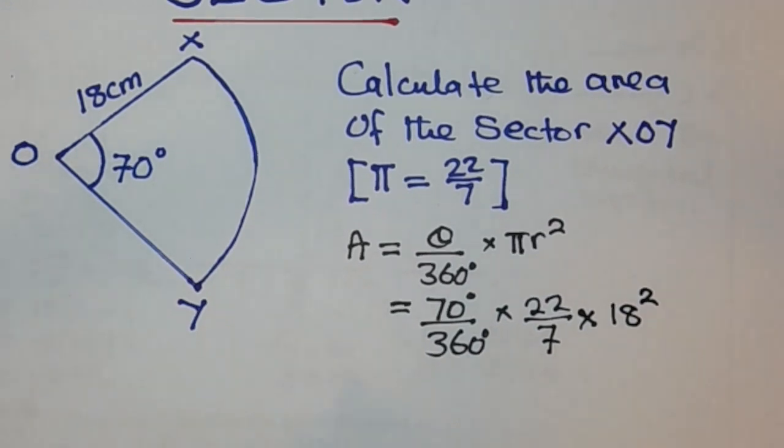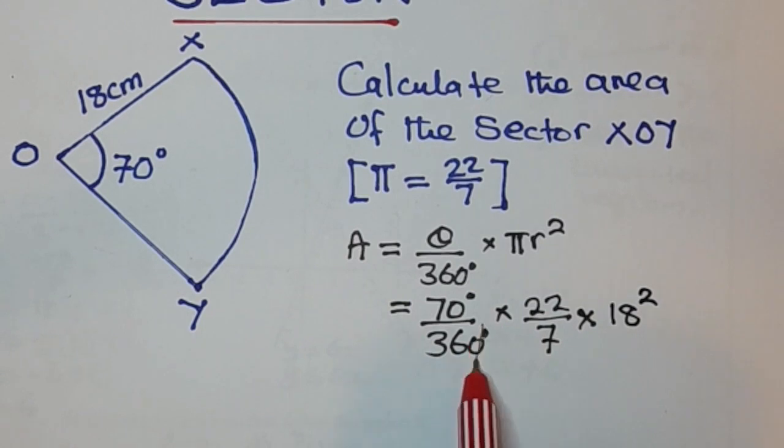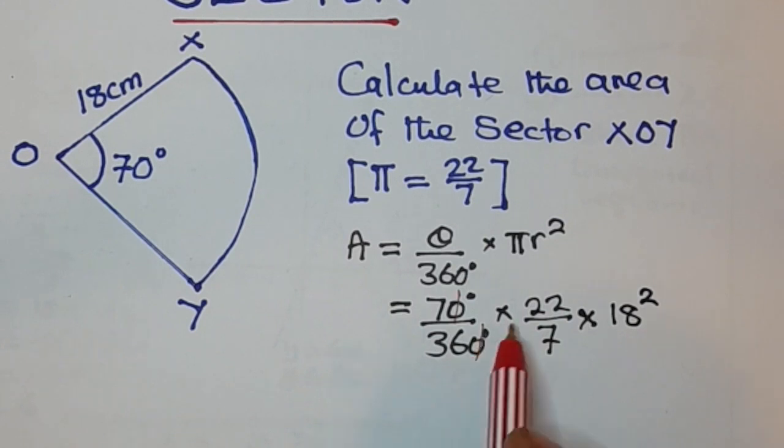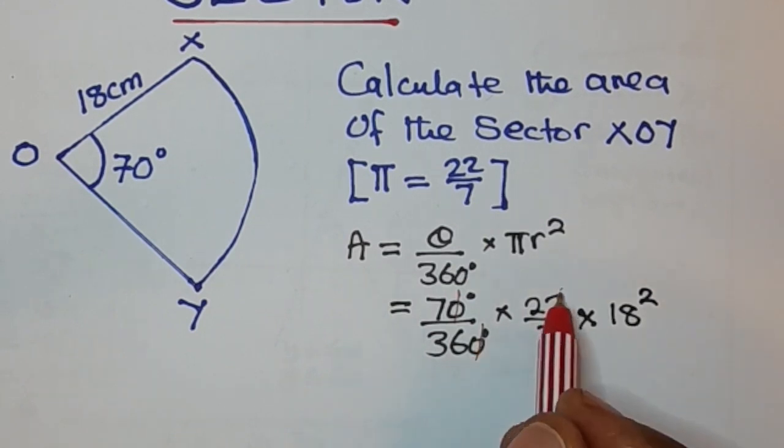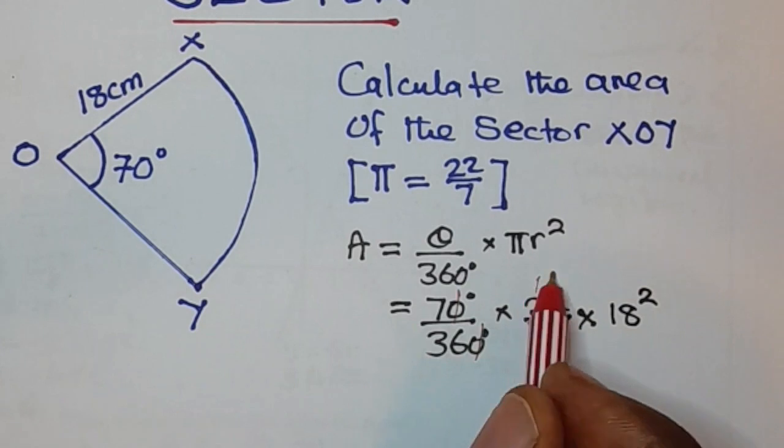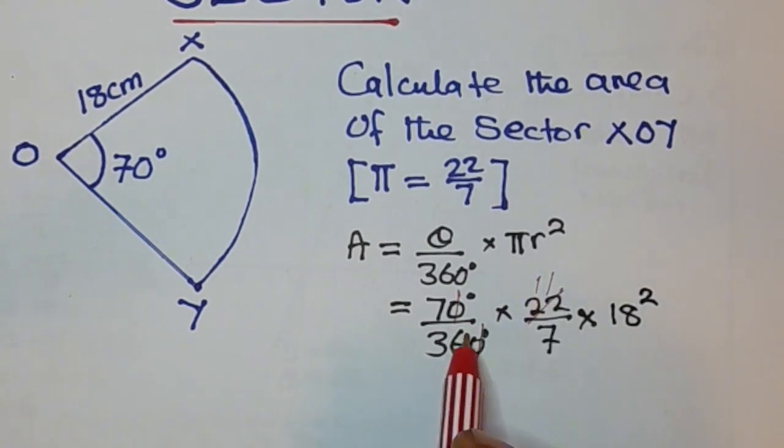Like this. Then at this stage, we can simplify things. So 0 and 0 is dividing, so we have 7 over 36. Again, 2 can go into 22 eleven times. Then 2 can go into 18. 2 can go into 36 eighteen times.